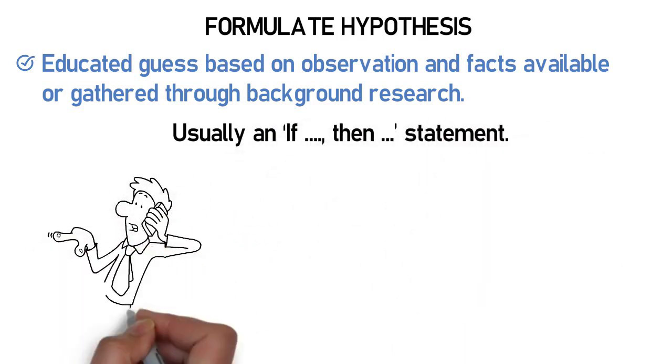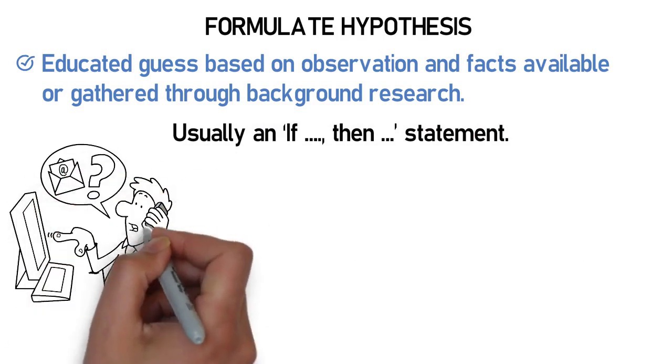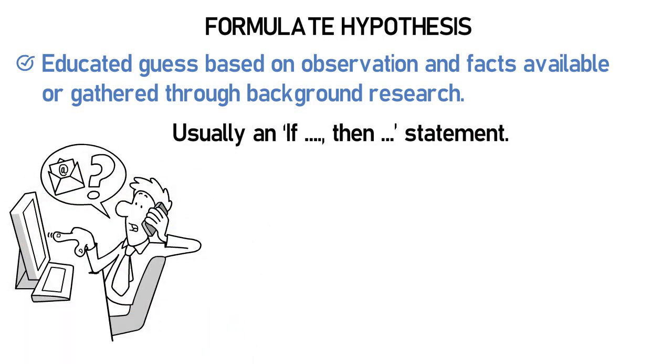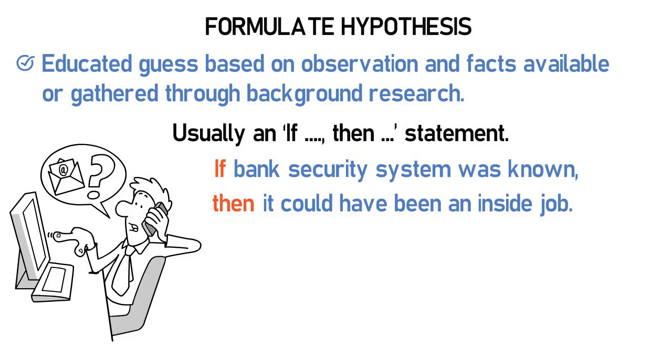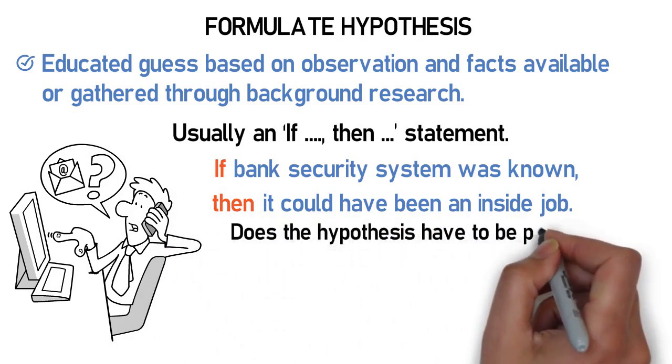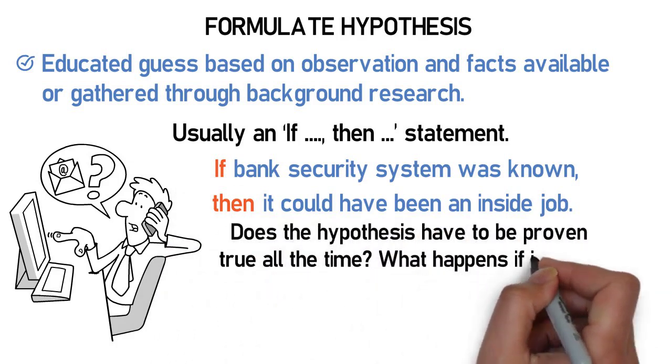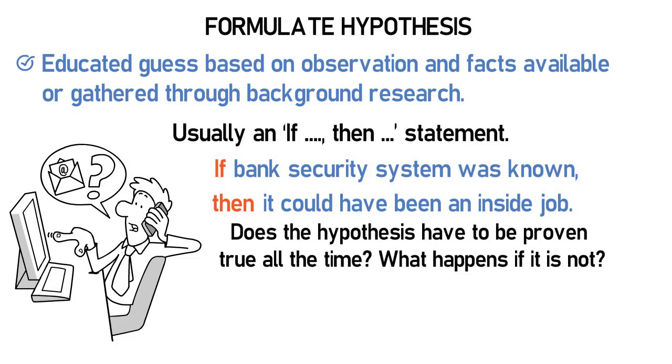For example, we are going to say that based on the information gathered, it appears that it was an inside job. So how do we make this an if-then statement? If the bank security system was known, then it could have been an inside job. Hypotheses do not need to be true all the time. If after testing it is determined that the hypothesis is not true, we start over and generate a new hypothesis.